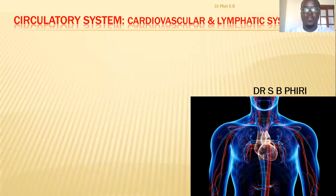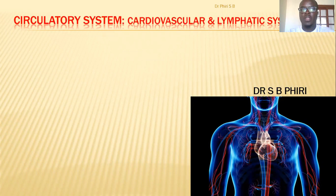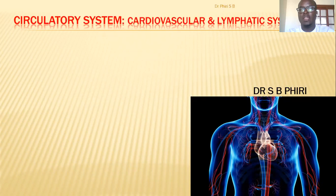Hi guys, this is Dr. Piri taking you through human physiology. Today we'll be looking at the circulatory system. The circulatory system is composed of the cardiovascular system and the lymphatic system. By now I hope you appreciate the physiology of the blood, as in certain textbooks you'll find that physiology of the blood is just a component of the circulatory system.